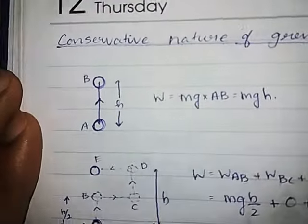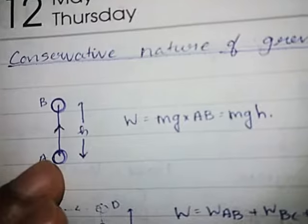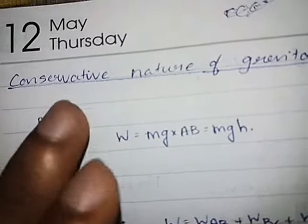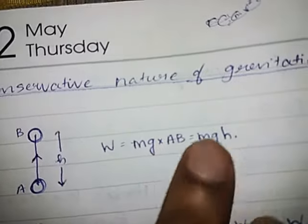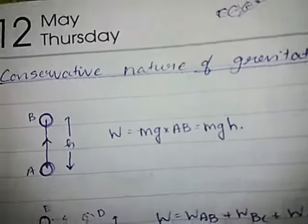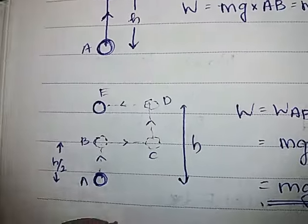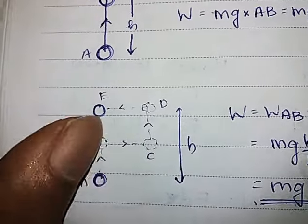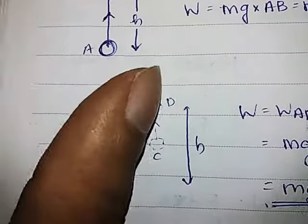The first question is that A and B are the positions. We are calculating the distance. If you go from A to B directly, the work done by gravity is mg times height h. Now, if you travel via path a, c, d, and e instead of directly from A to B...